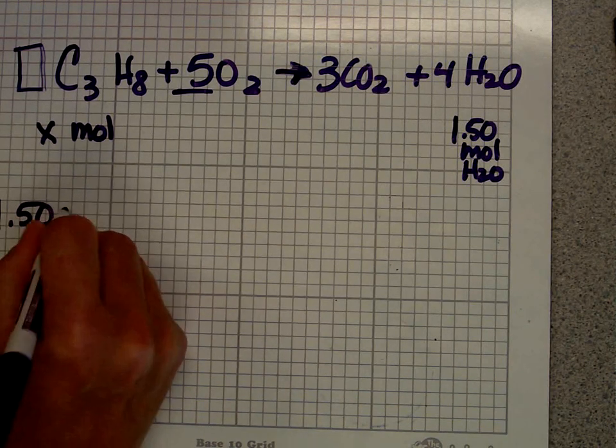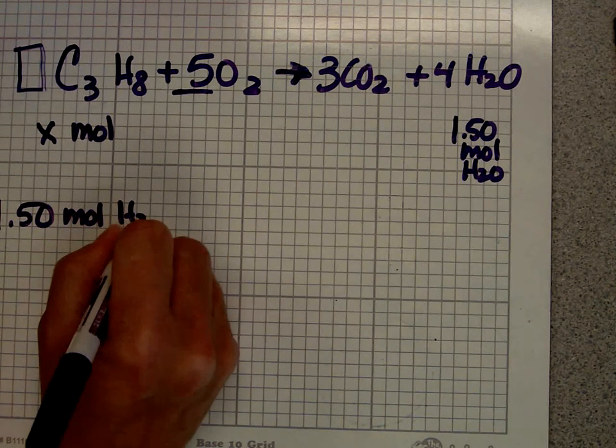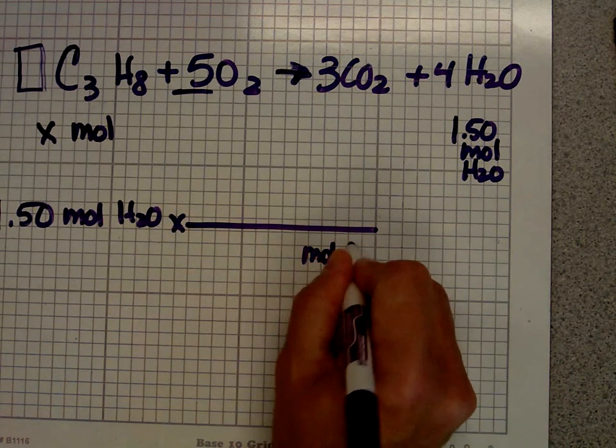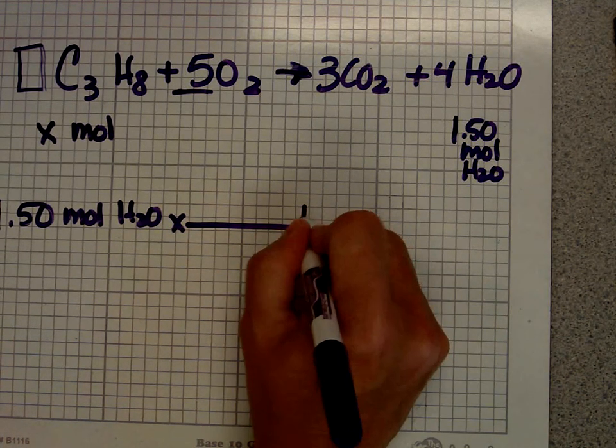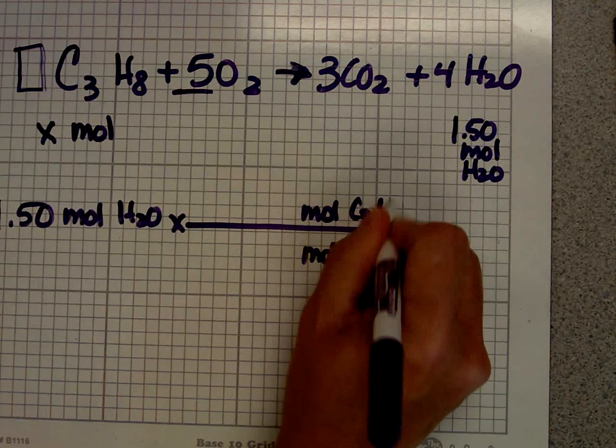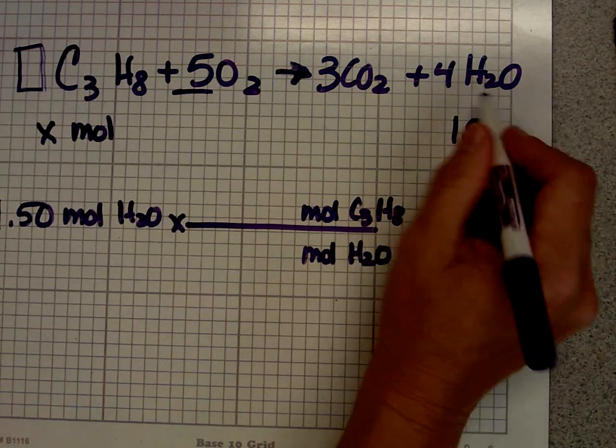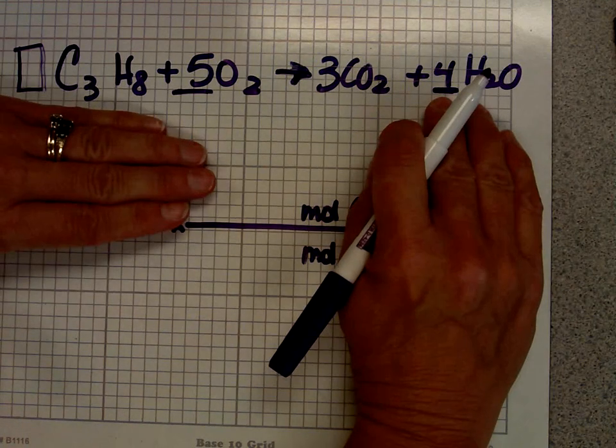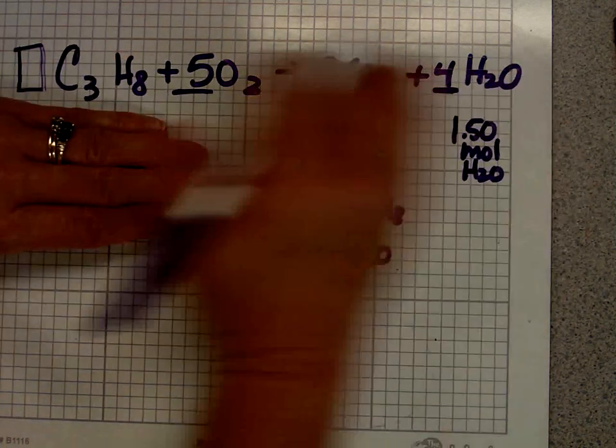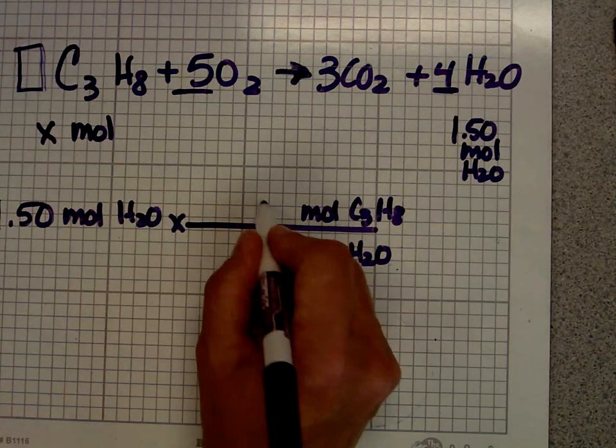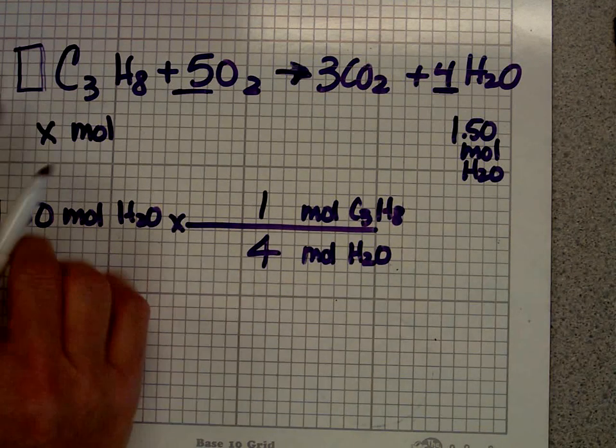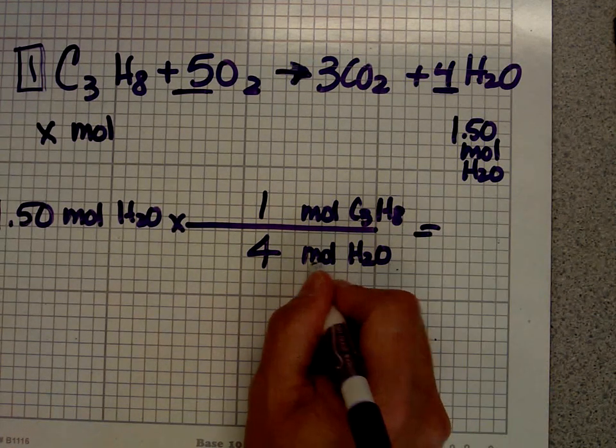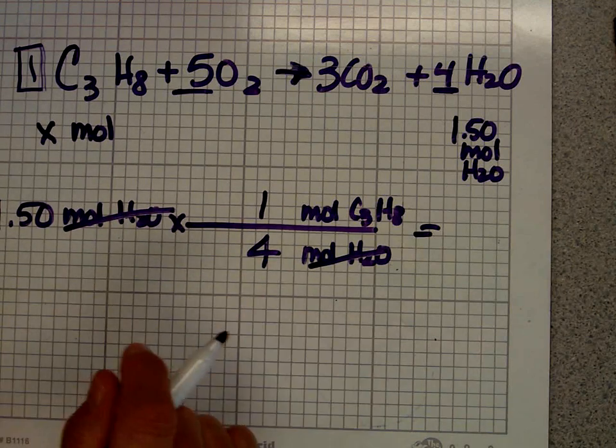1.50 moles of water times something. We want to get rid of moles of water. We want to be left with moles of C3H8. What number is my coefficient? Because moles over moles, you go back to the equation. This stuff doesn't matter. The only thing that counts is that equation. There's a 1 here and a 4 here. There's an invisible 1 there. We don't write it, but it's there.